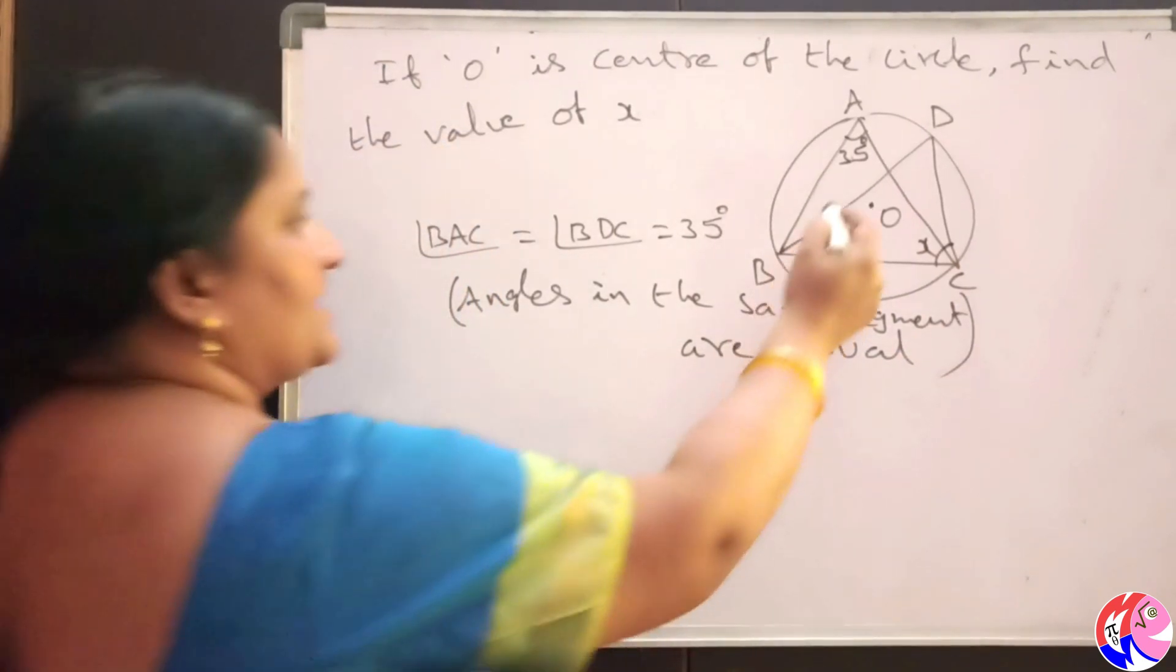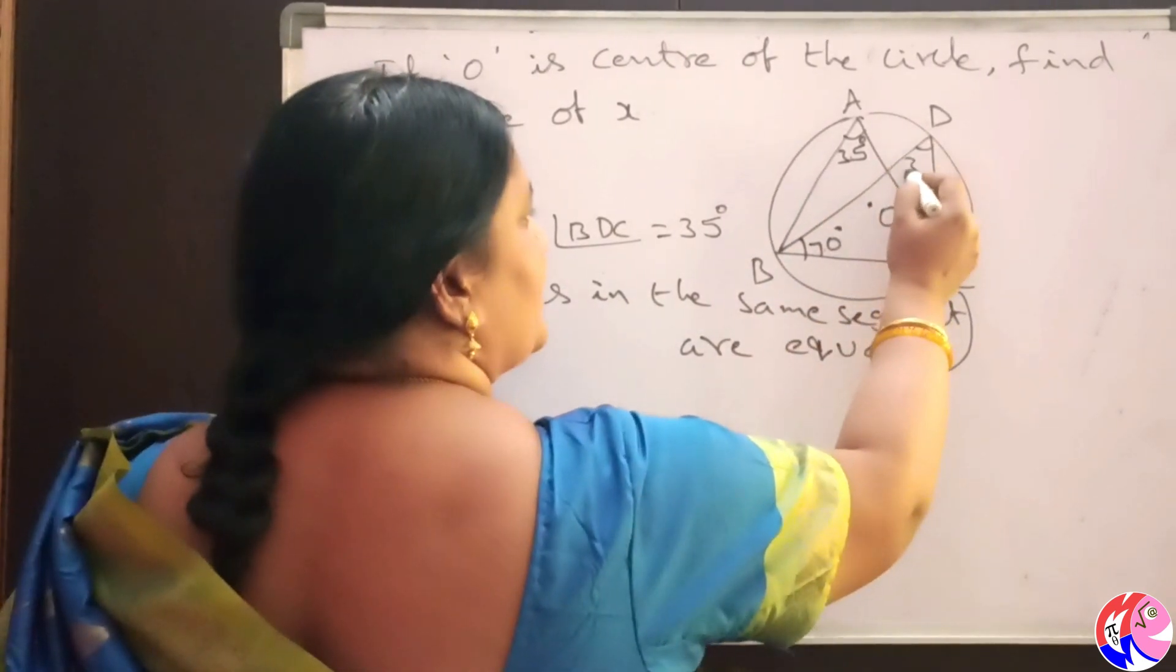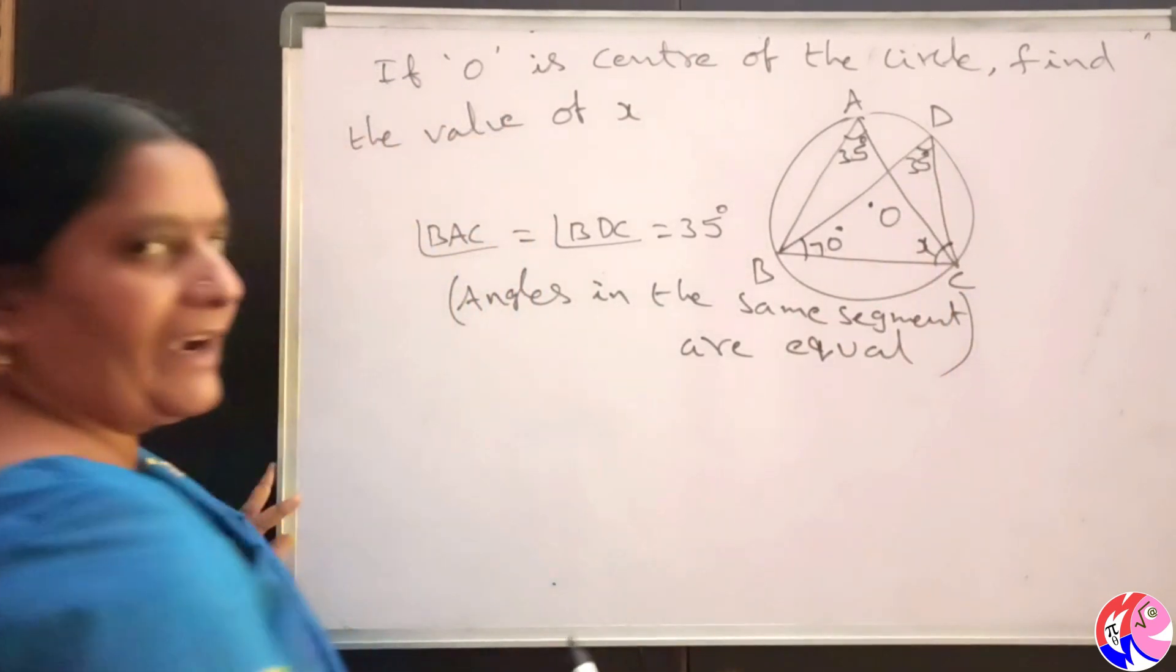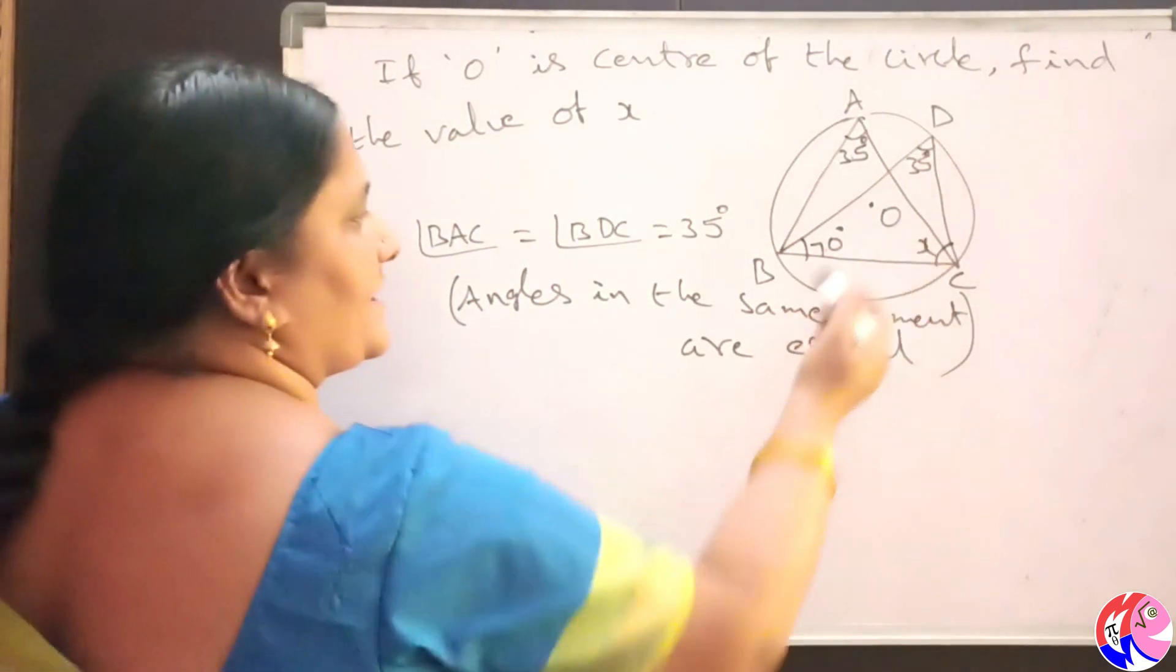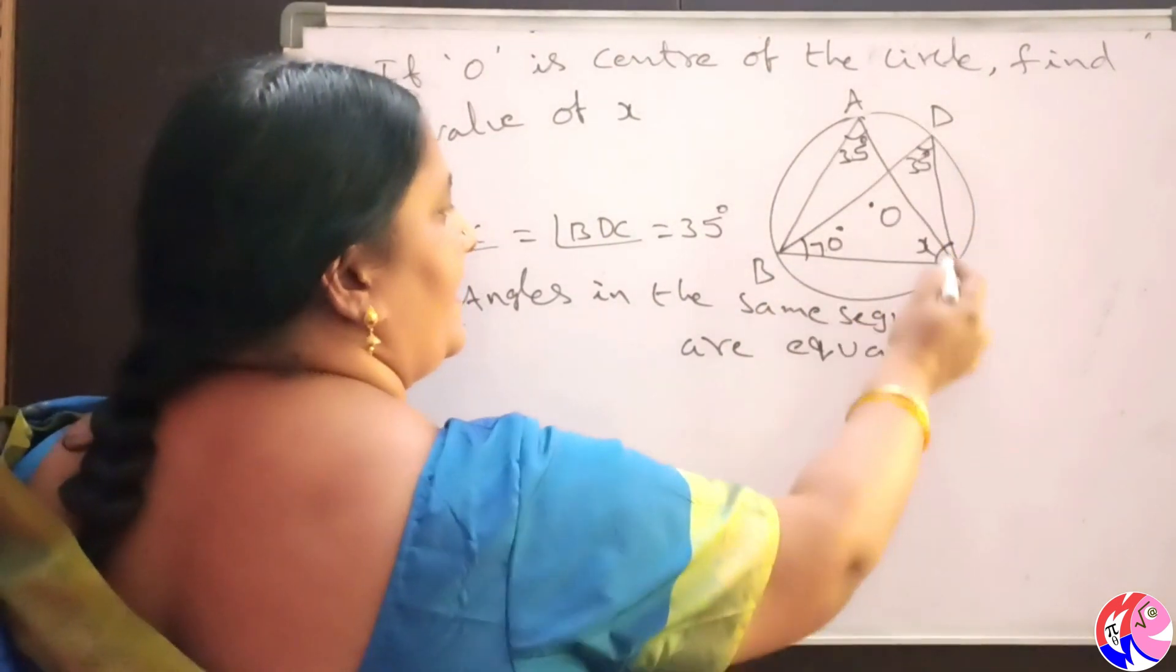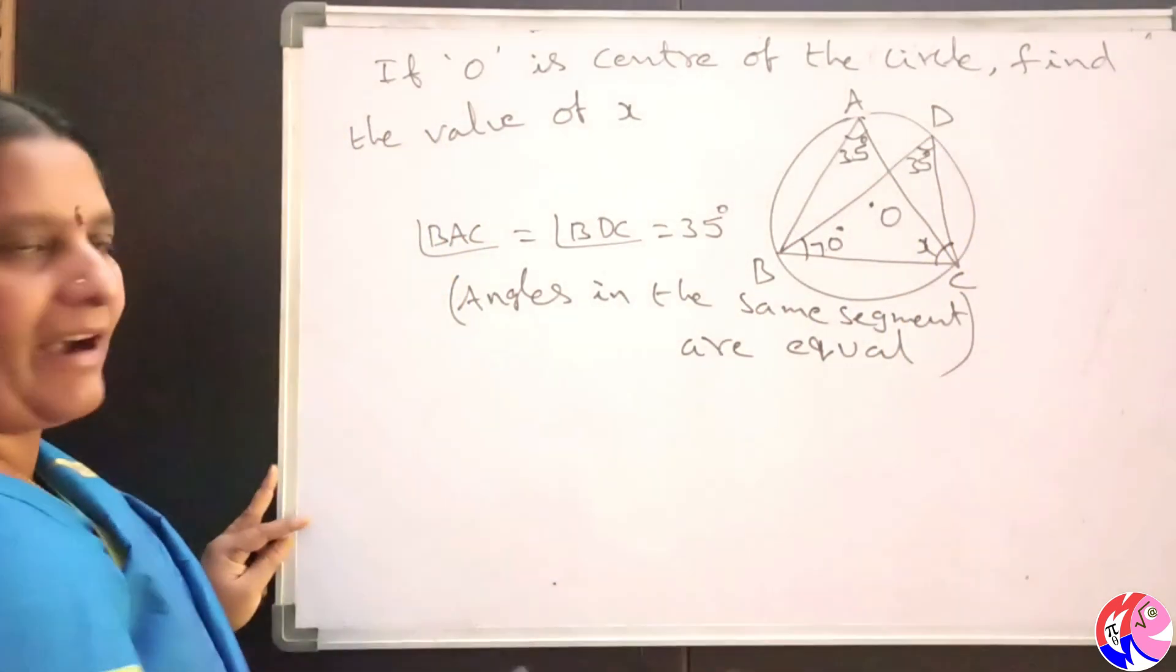Then, if this angle is 35 degrees, we have to find the measure of x. See in the diagram BCD, BCD is a triangle.